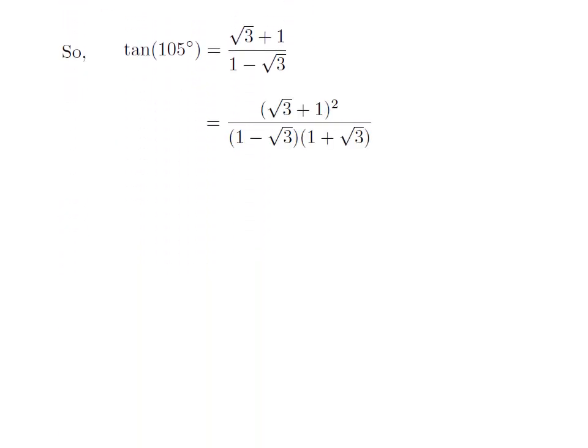As multiplying the numerator and denominator by the same number or expression doesn't change the fraction, I have multiplied the numerator and denominator by 1 plus square root of 3. Now, the numerator has become the square of (square root of 3 plus 1), and in the denominator, it is (1 minus square root of 3) into (1 plus square root of 3).